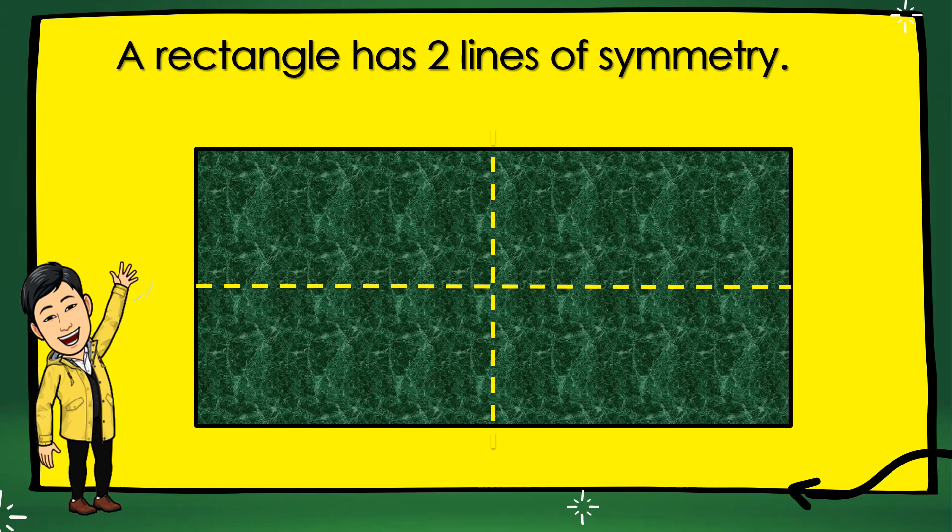Next, we also have a rectangle has two lines of symmetry. One, two. Again, a rectangle has two lines of symmetry.